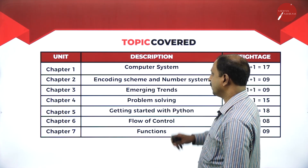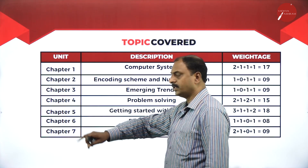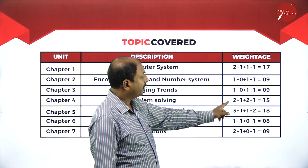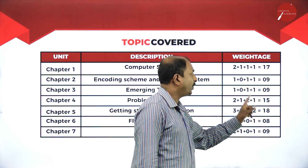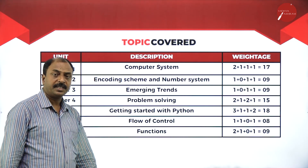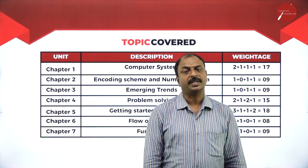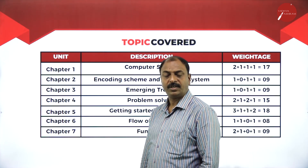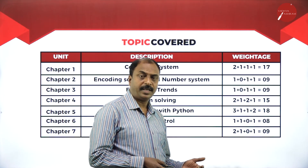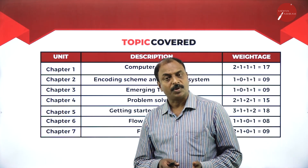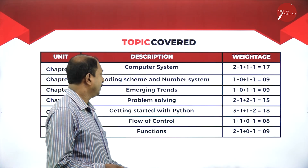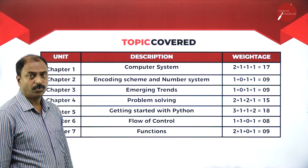Chapter 4 is Problem Solving Methodology, with a weightage of 15 marks — two MCQs, one two-mark question, two three-mark questions, and one five-mark question. This chapter covers how to solve problems using computers by following certain steps, including algorithms, flowcharts, and pseudocode.